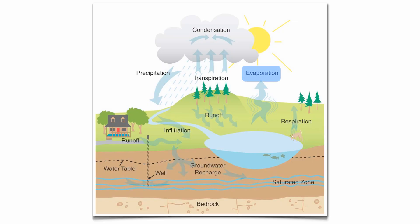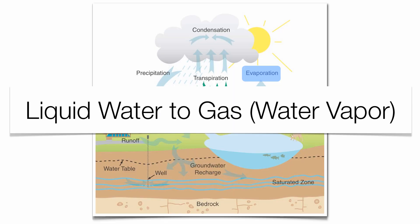The first one is evaporation. That's basically when liquid water from oceans, streams, lakes, are going to turn into gas. That's what we call water vapor.